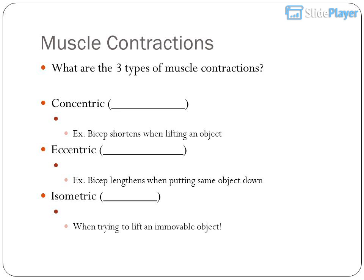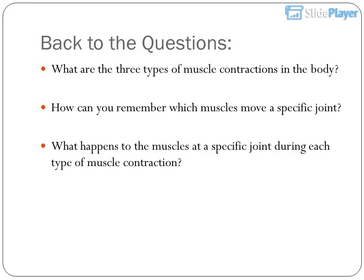Muscle contractions — what are the three types? Concentric: the bicep shortens when lifting an object. Eccentric: the bicep lengthens when putting the same object down. Isometric: when trying to lift an immovable object. Back to the questions: what are the three types of muscle contractions? How can you remember which muscles move a specific joint? What happens to muscles at a specific joint during each type of contraction?